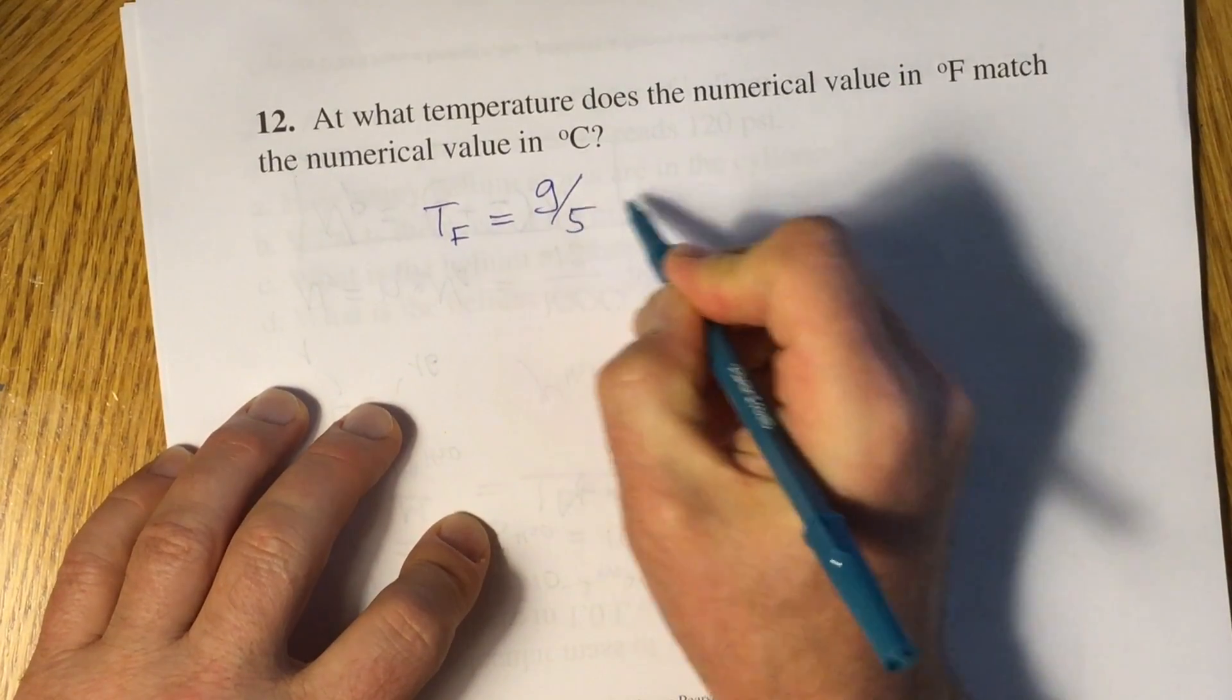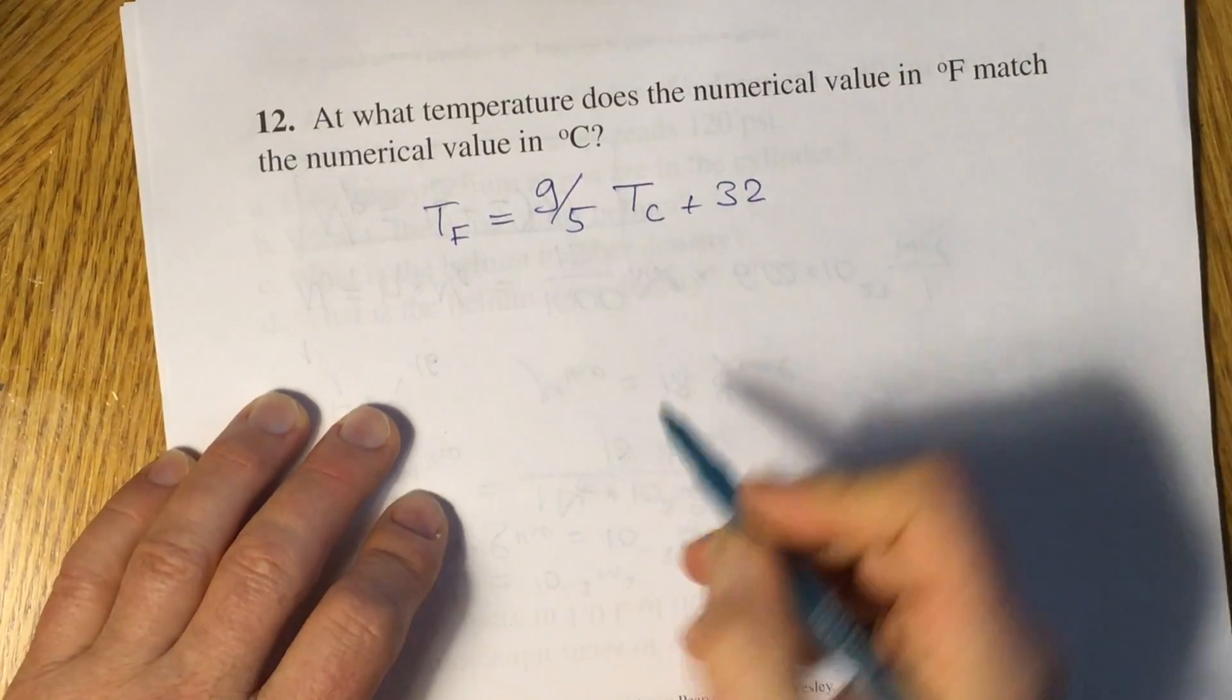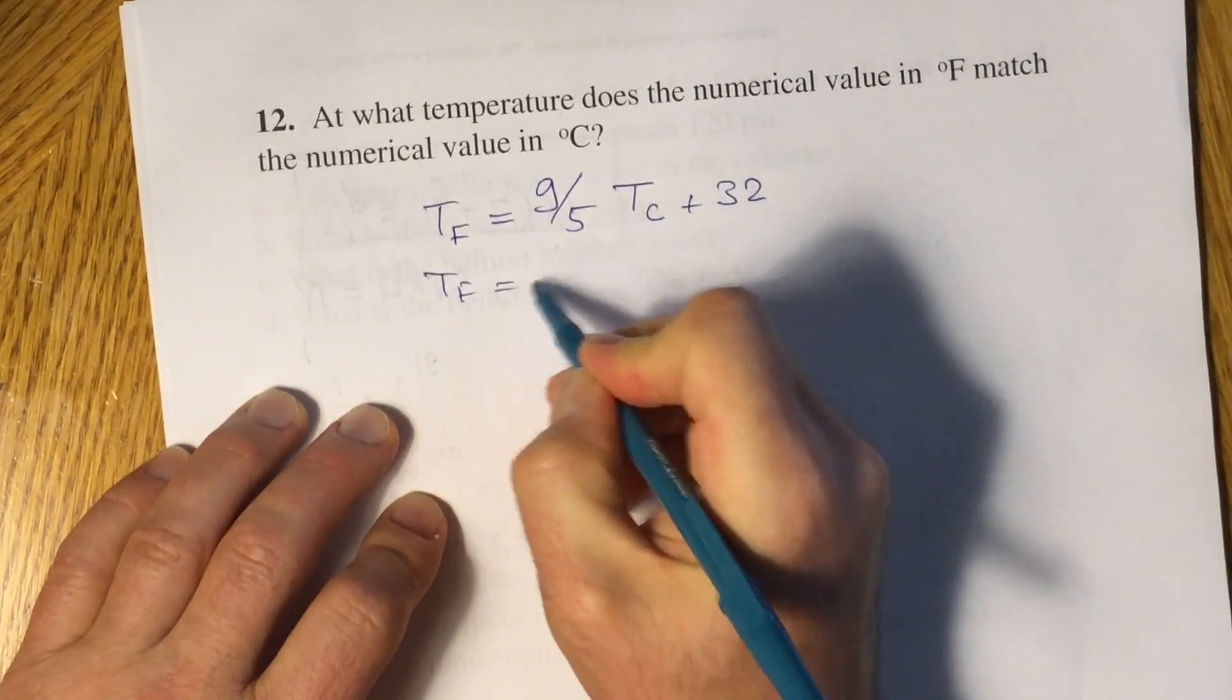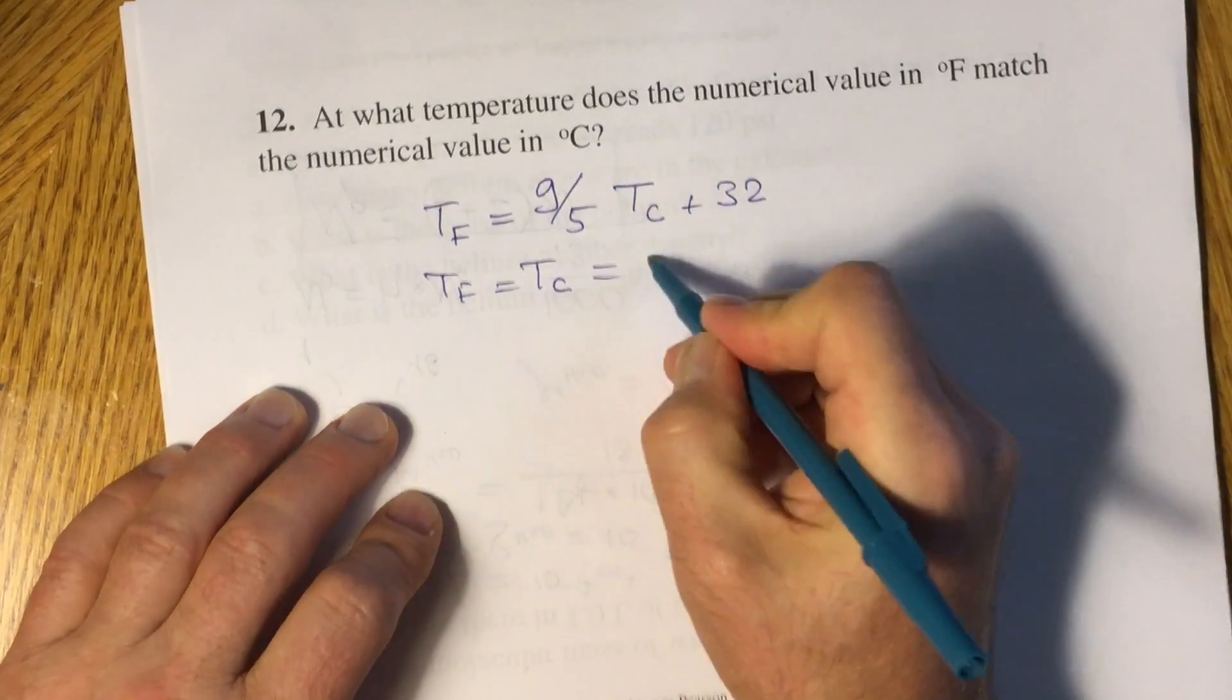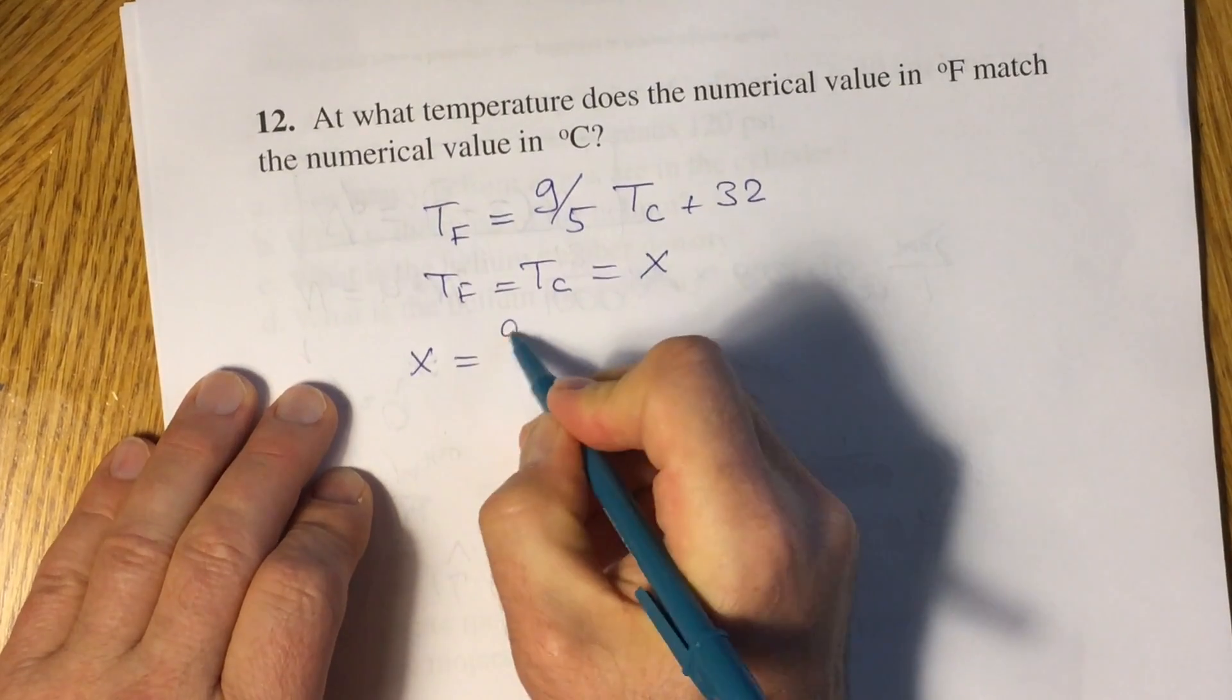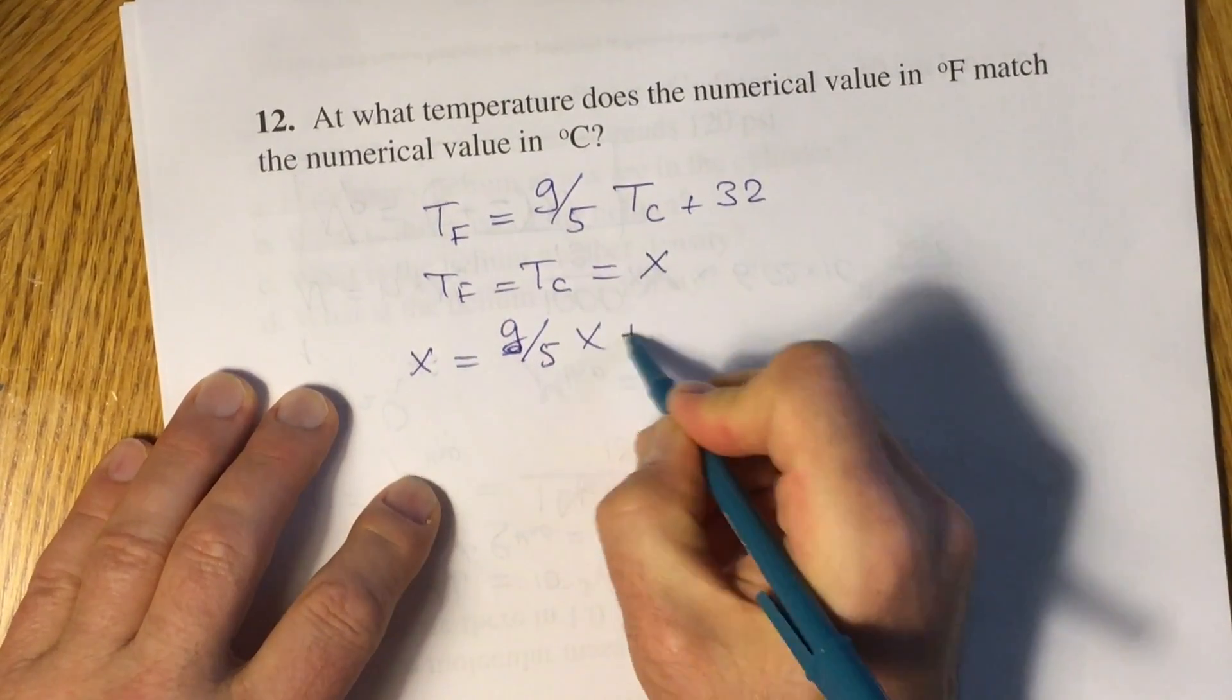The formula is Tf equals 9/5 times the temperature in degrees Celsius plus 32 degrees Fahrenheit. Because Tf equals Tc in our condition of the problem, let's put this as our x. We will have the formula x equals 9/5x plus 32.